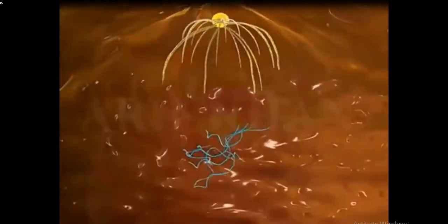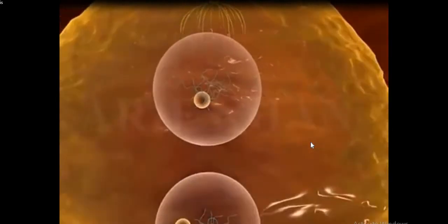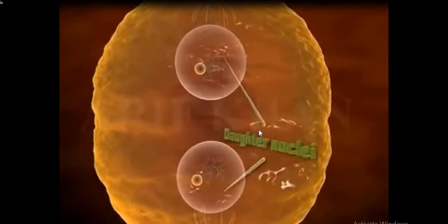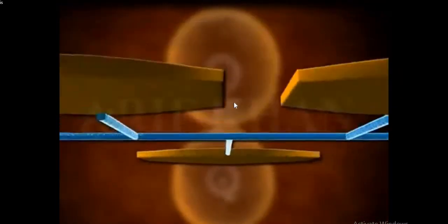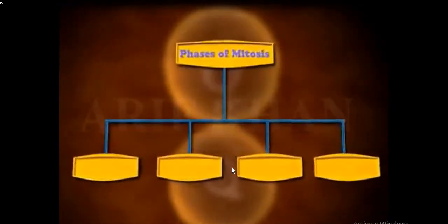So how does this process of mitosis take place? If you look at this cell, you can see that a cell has undergone division to form two daughter cells, and this is how mitosis takes place.